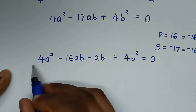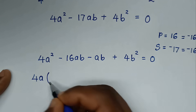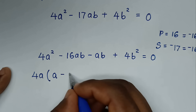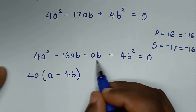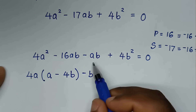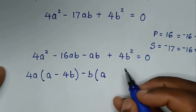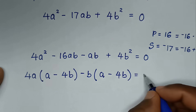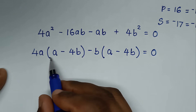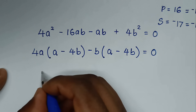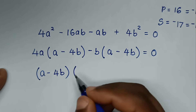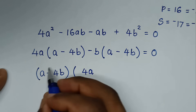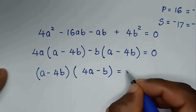We rewrite: 4a² - 16ab - ab + 4b² = 0. Grouping: 4a(a - 4b) - b(a - 4b) = 0. Factoring out (a - 4b): (a - 4b)(4a - b) = 0.